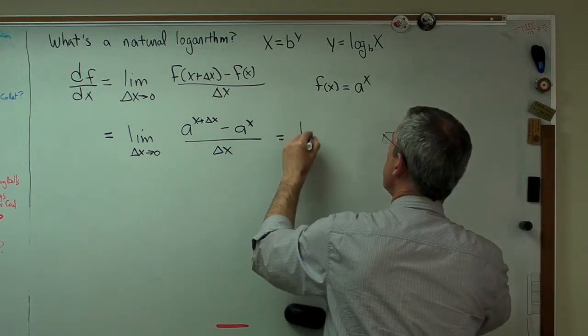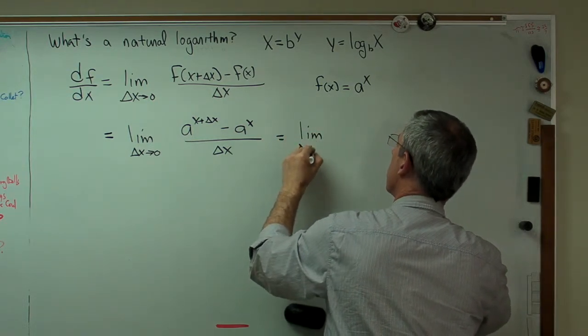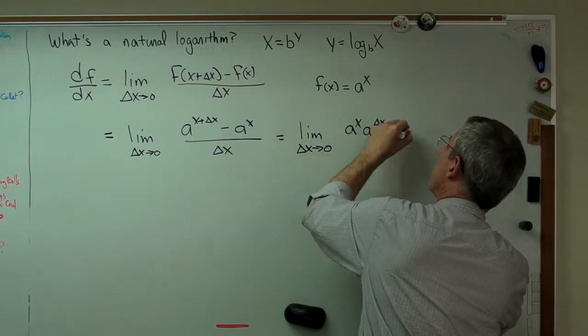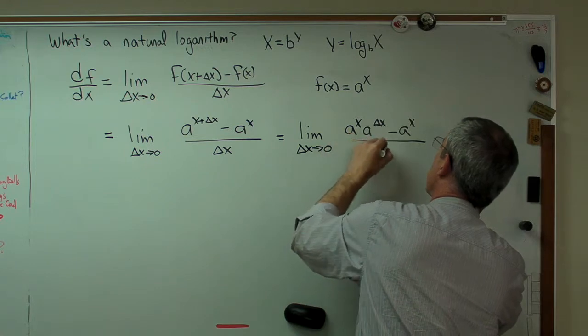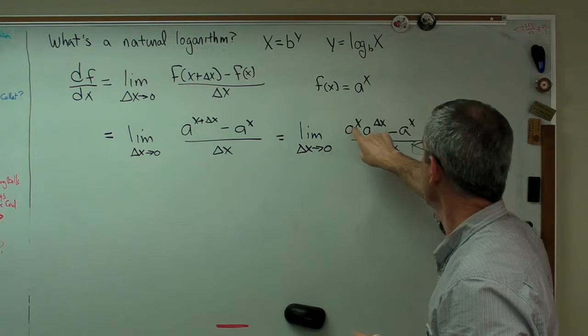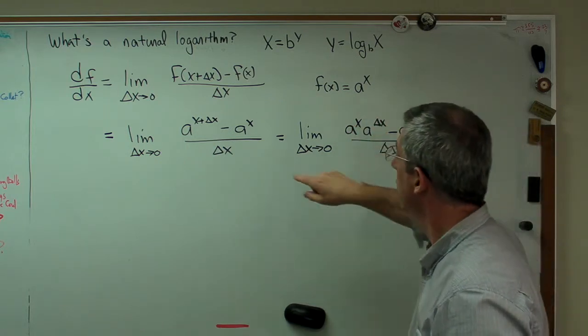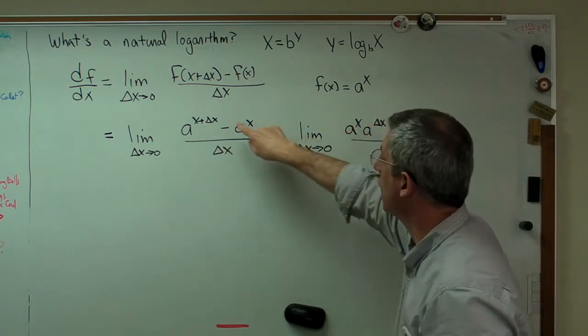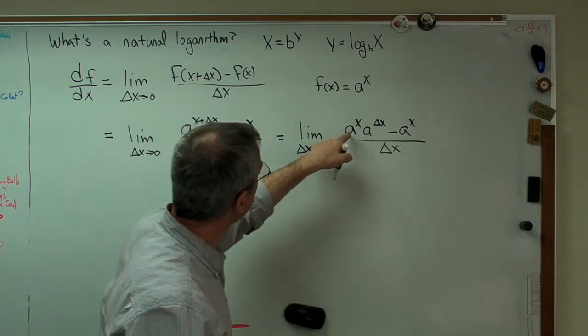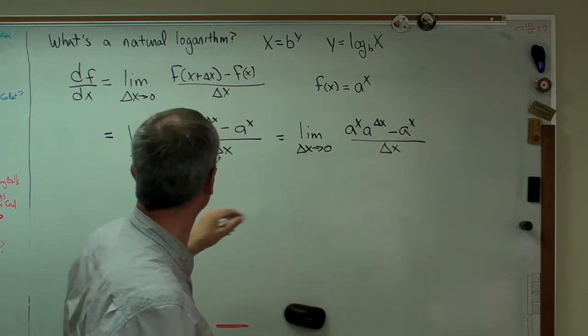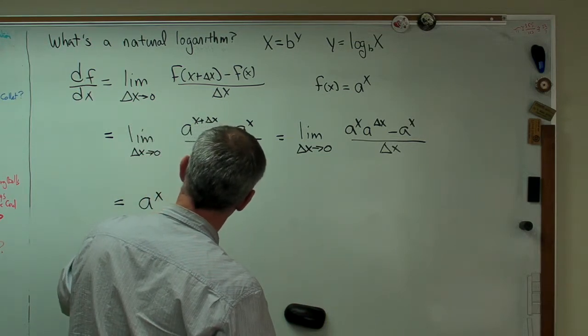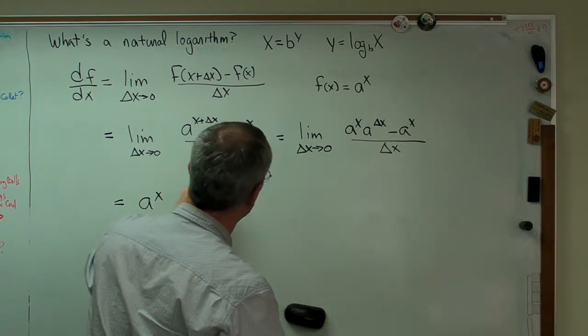Well, let's make one more simplification. a to the x plus delta x power equals a to the x times a to the delta x. This is kind of that logarithm thing. I'm getting to add exponents. So what I'm going to do here, since a to the x doesn't have delta x in it, I'm going to pull this out front, and I can do this.